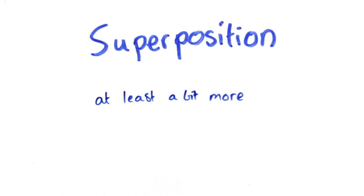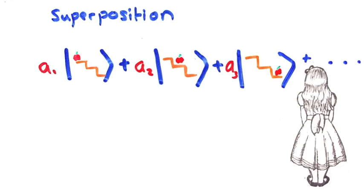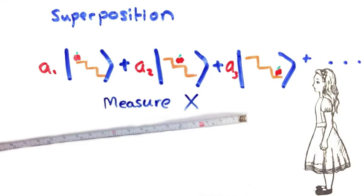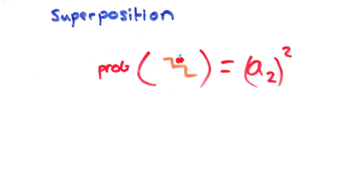Firstly, it helps us understand superposition. We said that while nobody is looking, an object is in a superposition of all possible states for observable x. When we measure x, it will collapse to one of those states with probability given by the square of the coefficient, according to quantum mechanics.